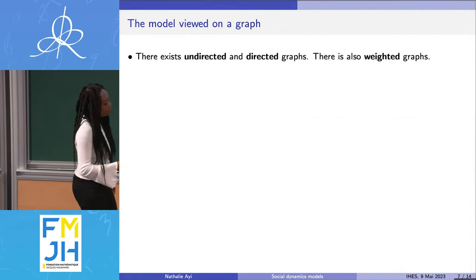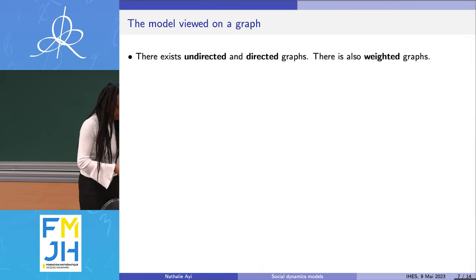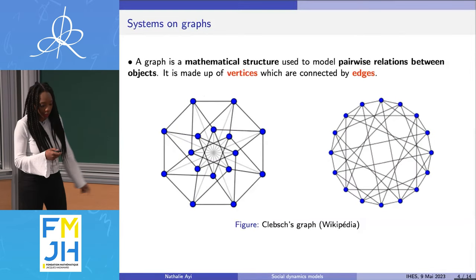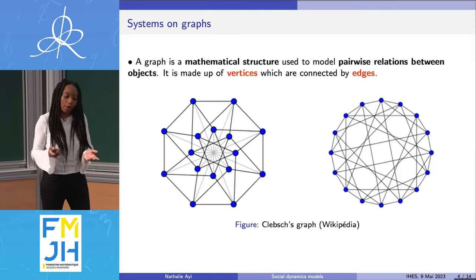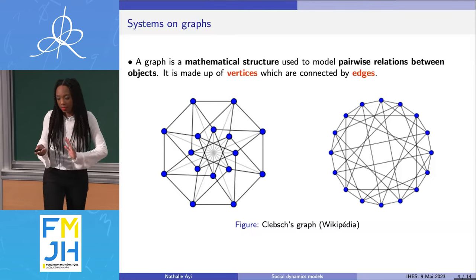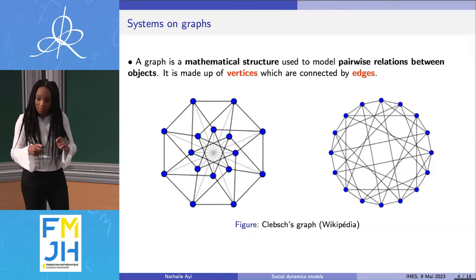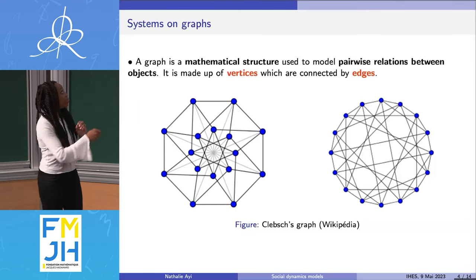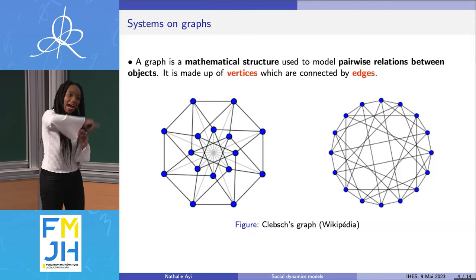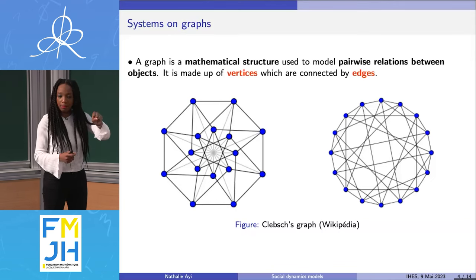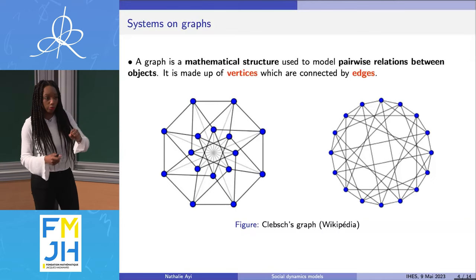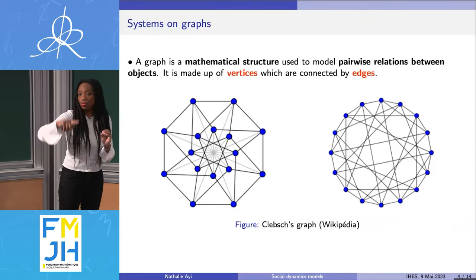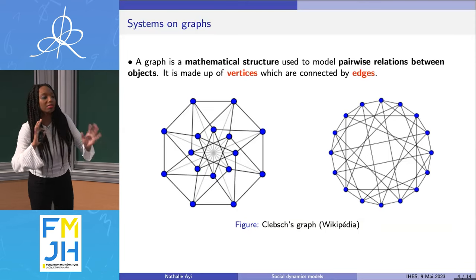Let me say another word about graphs. There exist two types of graphs: undirected and directed. In an undirected graph, when you have a connection between two vertices, it goes both ways — vertex one acts on two and two acts on one; it is symmetric. In a directed graph, you have to pay attention to direction: it's not because one acts on two that two acts on one.